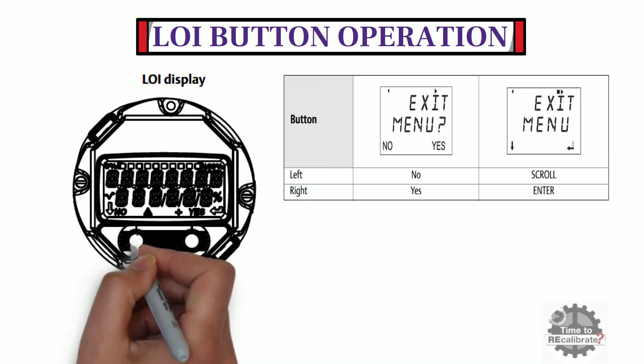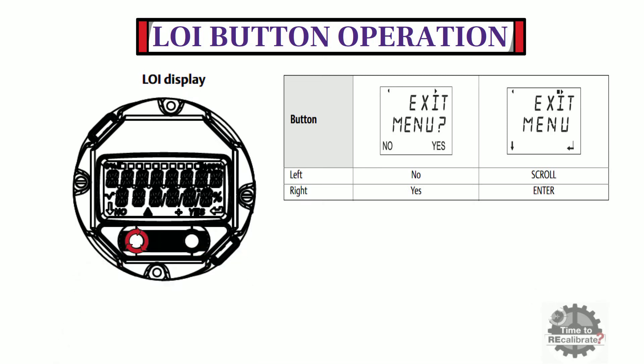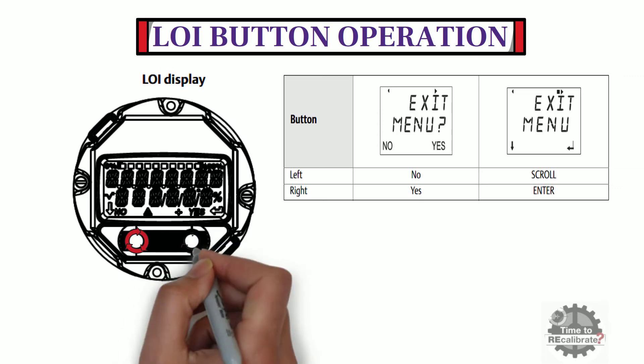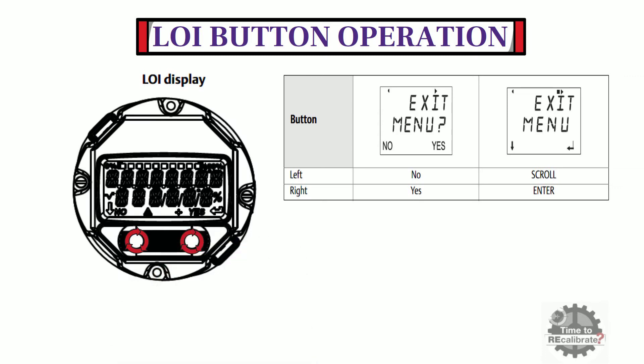One is LH button, and this button is used to scroll through menu function. And another is RH button. This button is used to enter the value and also used to confirm value.